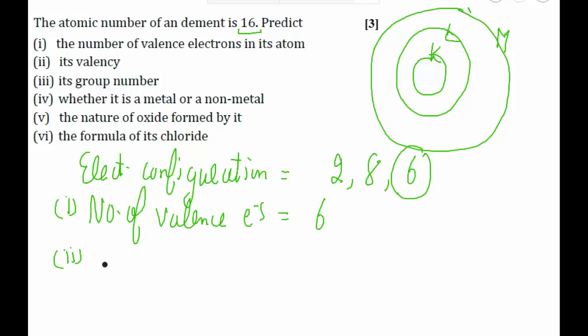The second part says we need to calculate the valency. Always remember valency is simply equal to number of valence electrons or 8 minus number of valence electrons, which in this case is 8 minus 6, that is 2. We take the smaller out of these two numbers. Hence the valency will be 2.